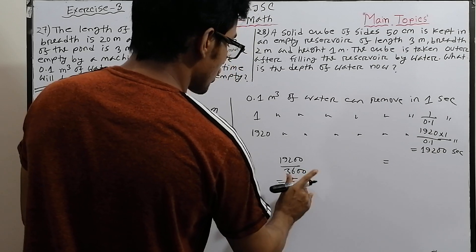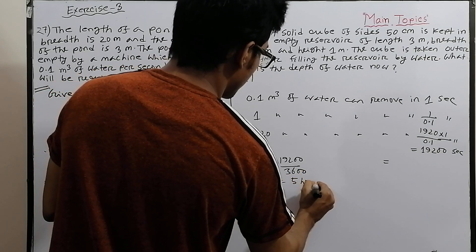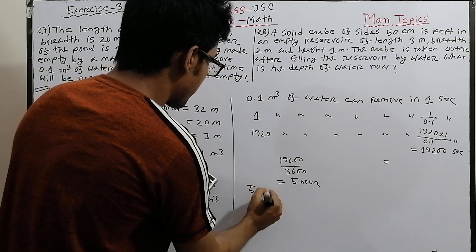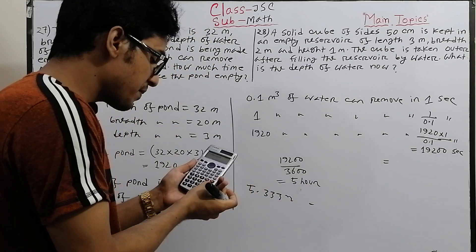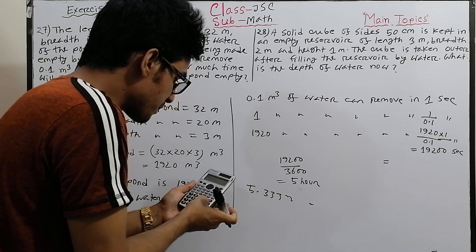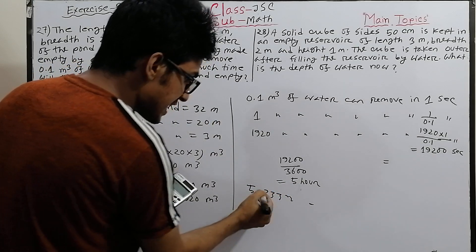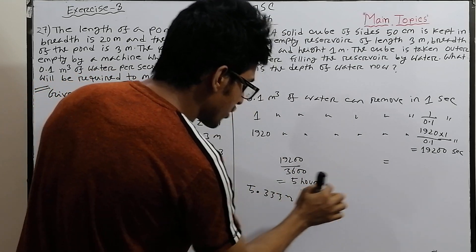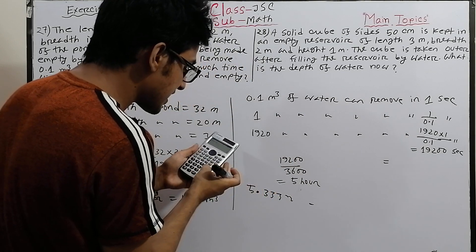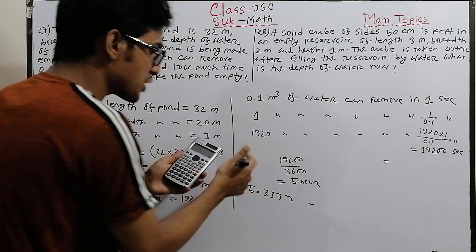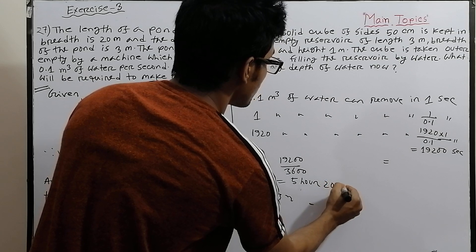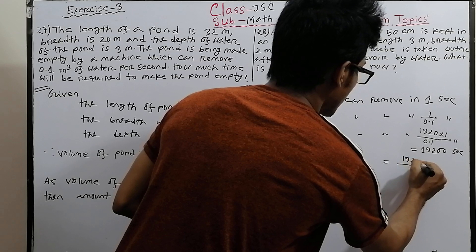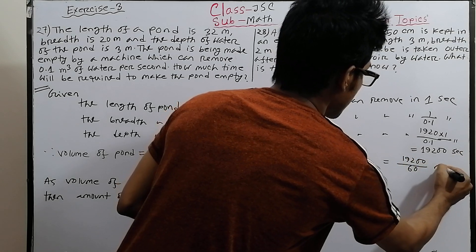Dividing 19200 by 3600 gives 5.333... hours, which is approximately five point three three three hours. So the result is five hours and something more. We take 5 hours and find the remaining decimal part to convert to minutes.